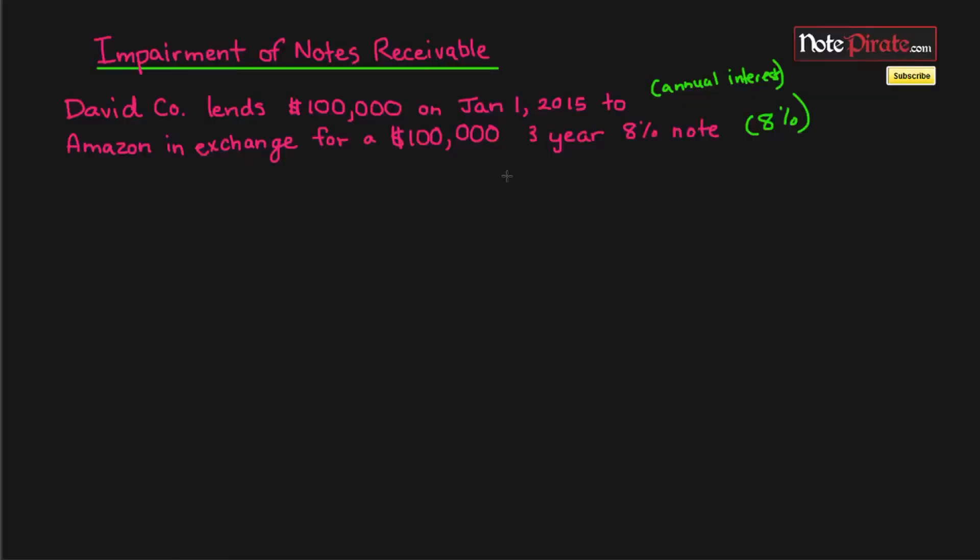The last topic we'll be looking at with regard to notes receivable will be the impairment of notes receivable. That's because what if we have a debtor that we've loaned money to and they become insolvent and they can't pay back the principal and interest? We're going to have to report an impairment charge. So let's go ahead and look at this scenario and report an impairment charge in this video.